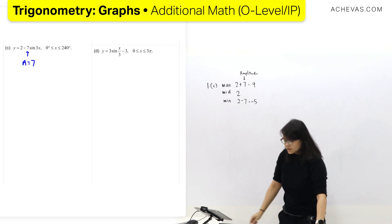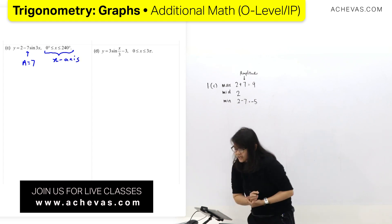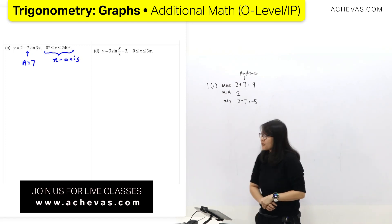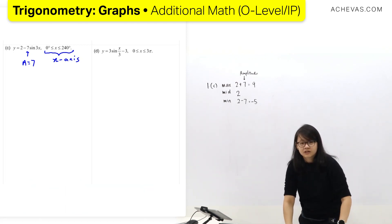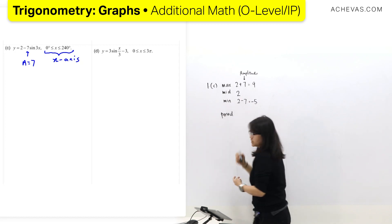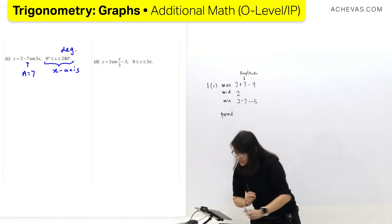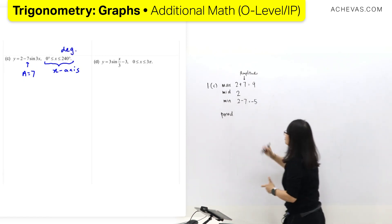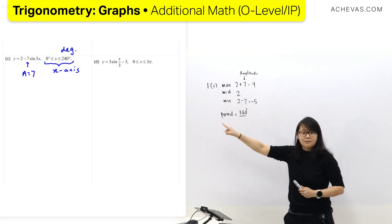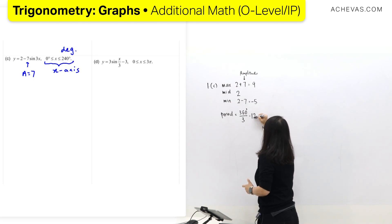Next, the planning for the x-axis. They asked me to draw until 240, okay, we'll take a look at that later. The next step is to write down the period. When I write down the period, I check whether the question is in degrees or radians — it's in degrees. So my calculation of the period uses 360 divided by the number beside x, which is 3. So 360 divided by 3 gives me 120 degrees.